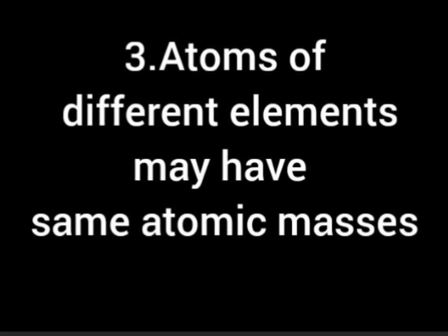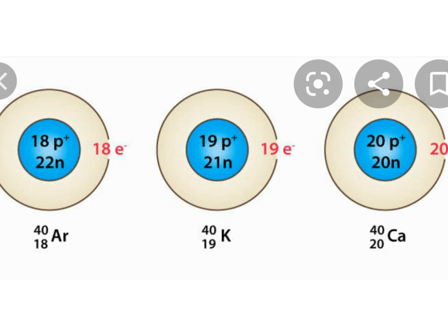The third postulate: atoms of different elements may have the same atomic masses. This concept is called isobars. For example, argon (Ar) and calcium (Ca). Argon and calcium both have mass number 40, but their atomic numbers are different — 18 for argon and 20 for calcium, as seen in the periodic table. So isobars have the same mass number but different atomic numbers.